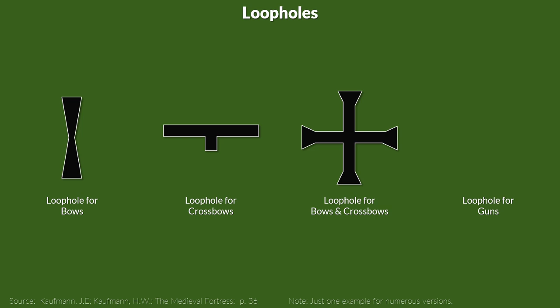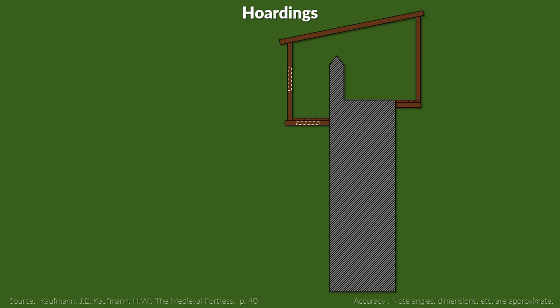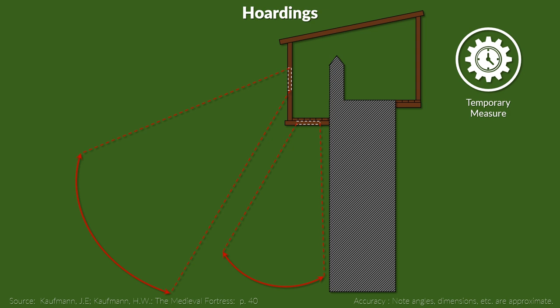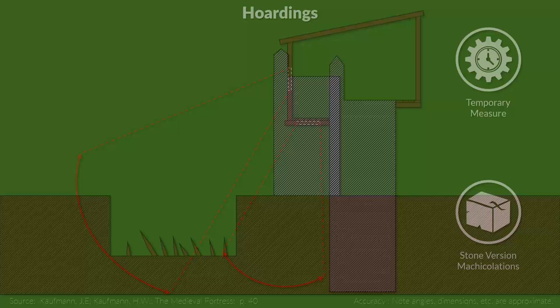Loops for handguns were mostly vertical but often had at least one circular exit point. The most sophisticated loopholes had mechanisms that allowed them to be turned, functioning a bit like a turret. Another additional defensive measure were hoardings — wooden structures with various openings that provided an extended and protected area over the walls, allowing defenders to drop and fire on troops standing close to the walls. Similar stone versions added to castles were called machicolations, which were usually more sophisticated and came in various types.